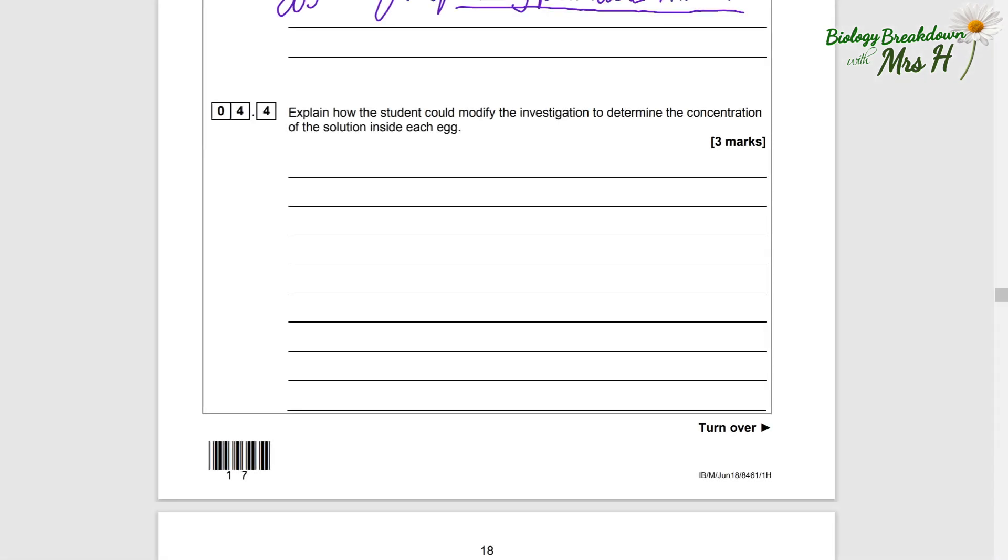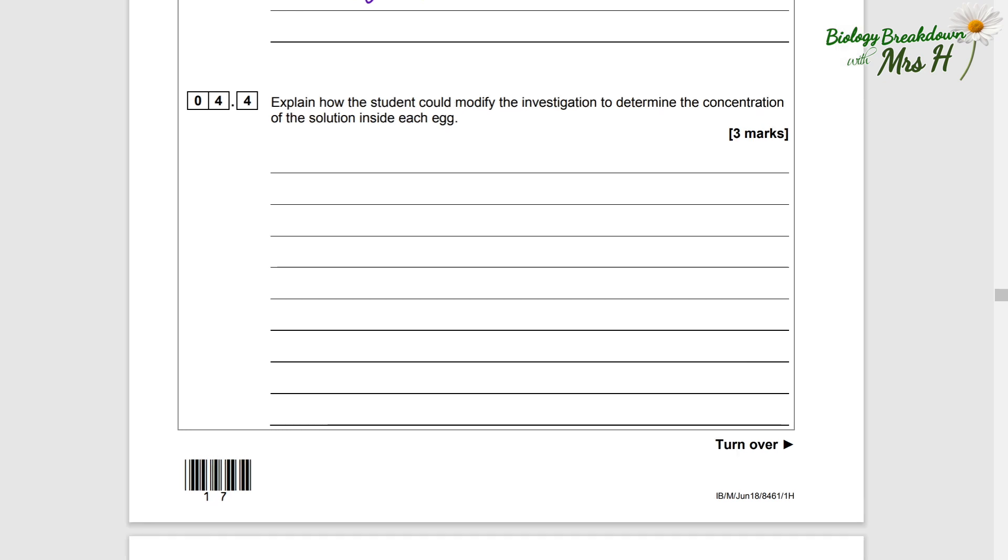4.4: Explain how the student could modify the investigation to determine the concentration of the solution inside the egg. This is a really hard question. But do you remember the required practical where you measured the mass of potato chips before placing each chip in a different concentration of sugar solution? Then when you measured the mass again after the chips had been soaking for a while, you found some chips had gained mass and some had lost mass.